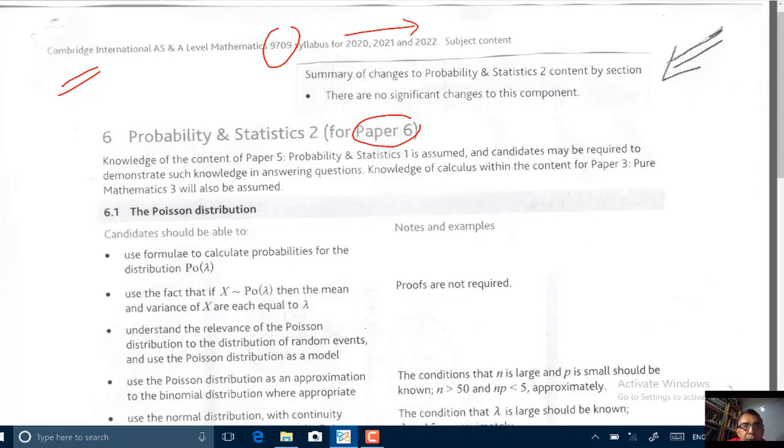We are going to be talking about the syllabus for the Probability and Statistics 2 part, Paper 6. And first off, now it's Paper 6. The previous syllabus, it was Paper 7. So what has happened is, the whole of Paper 7, the syllabus for Paper 7 previously, has now been transferred to Paper 6.